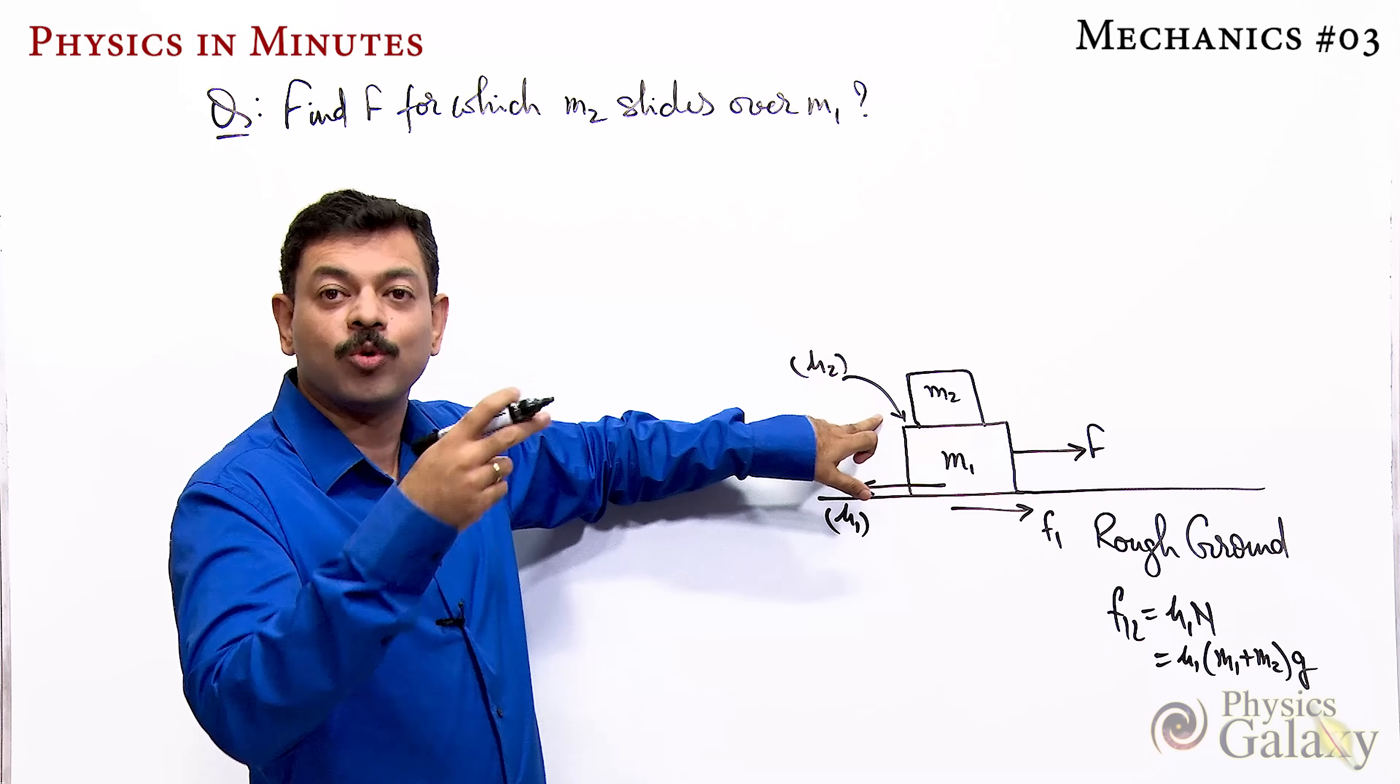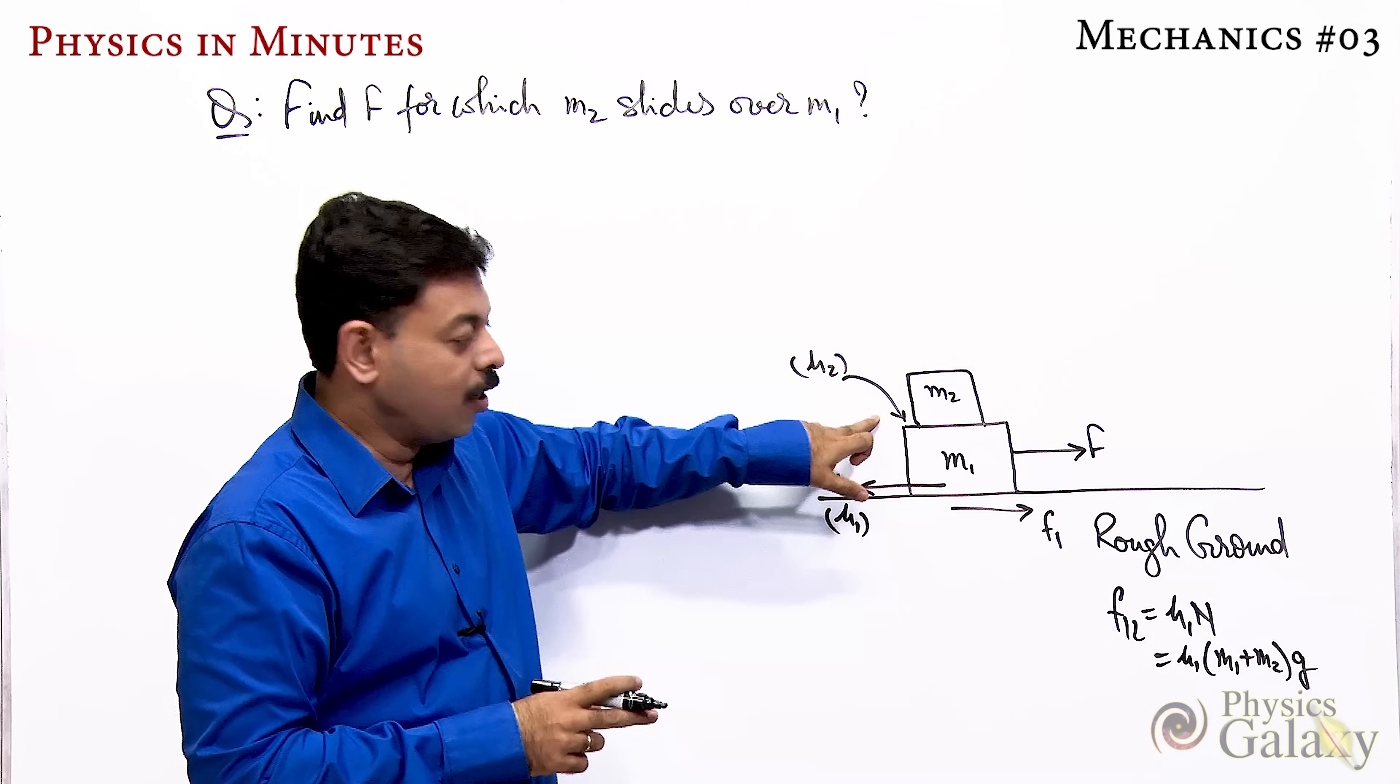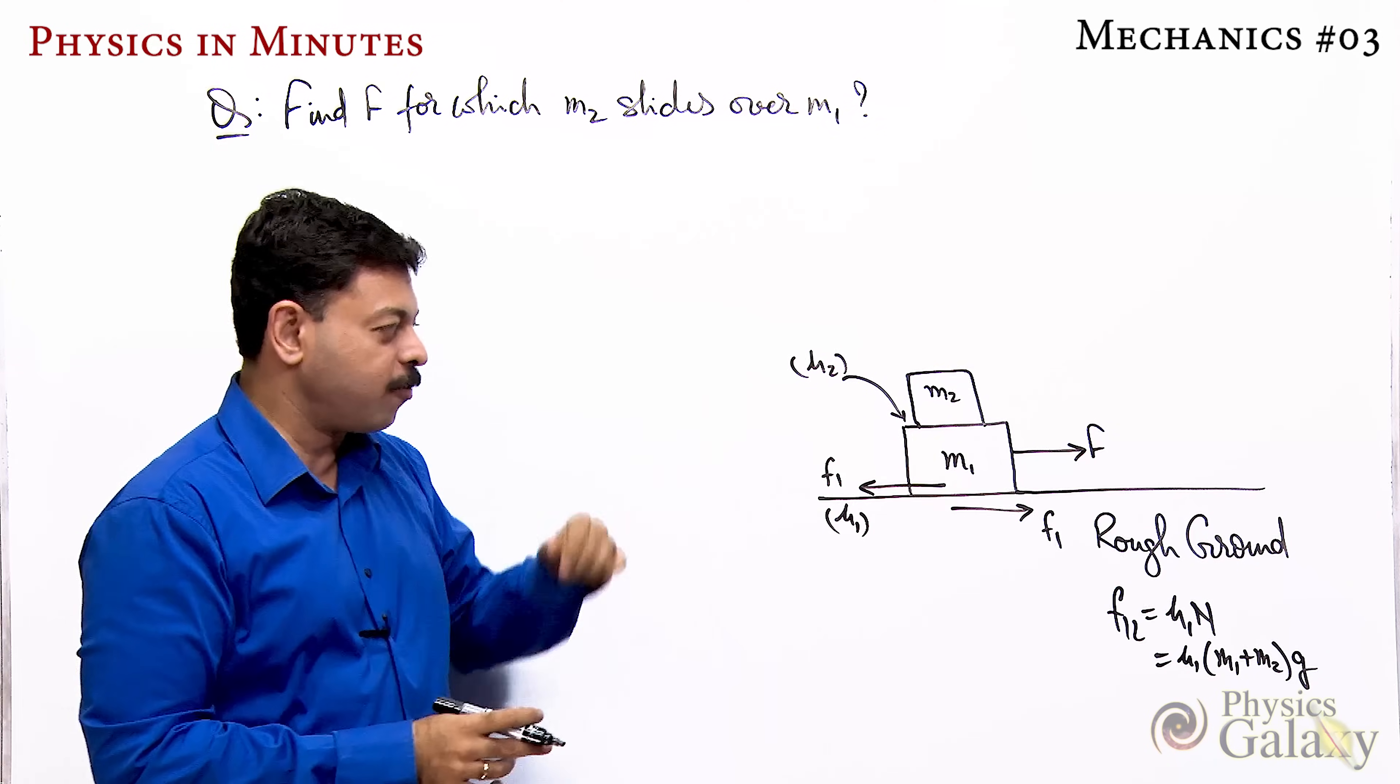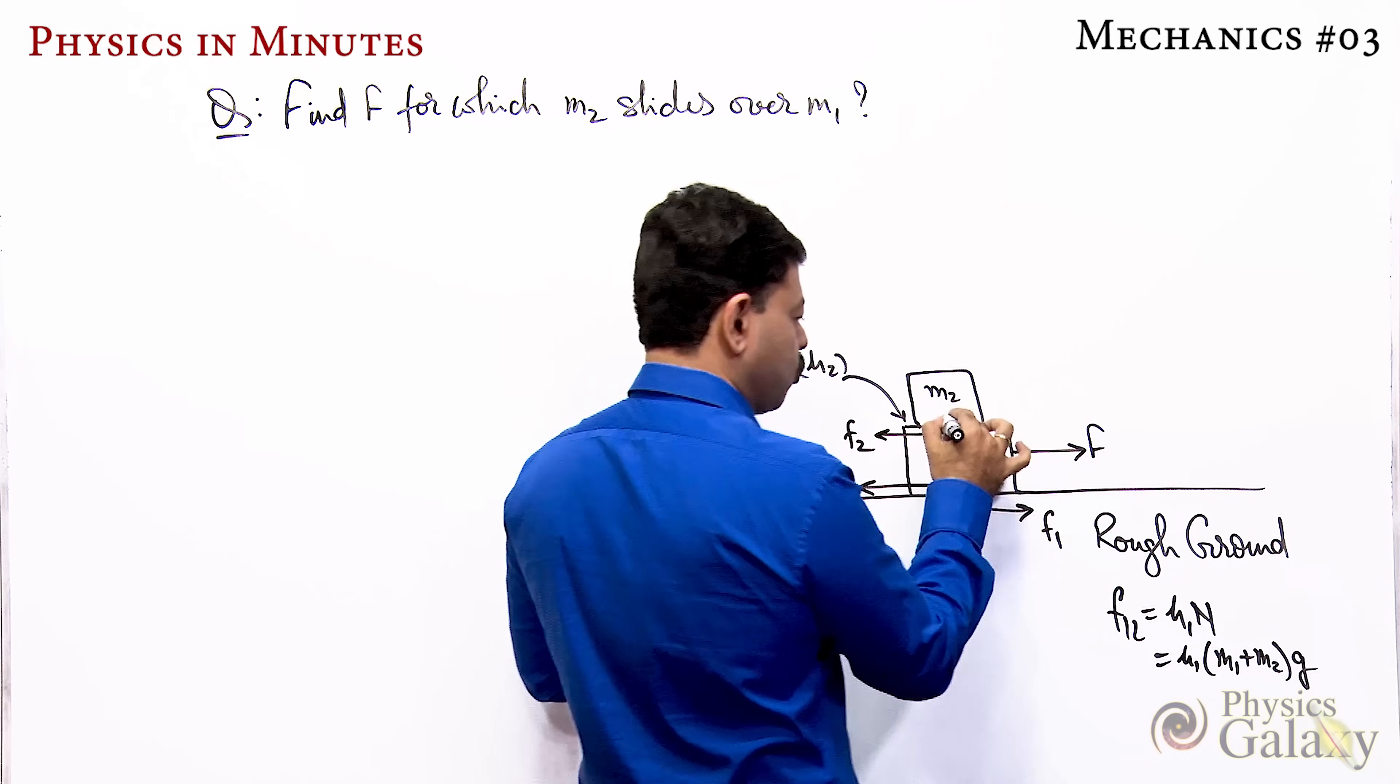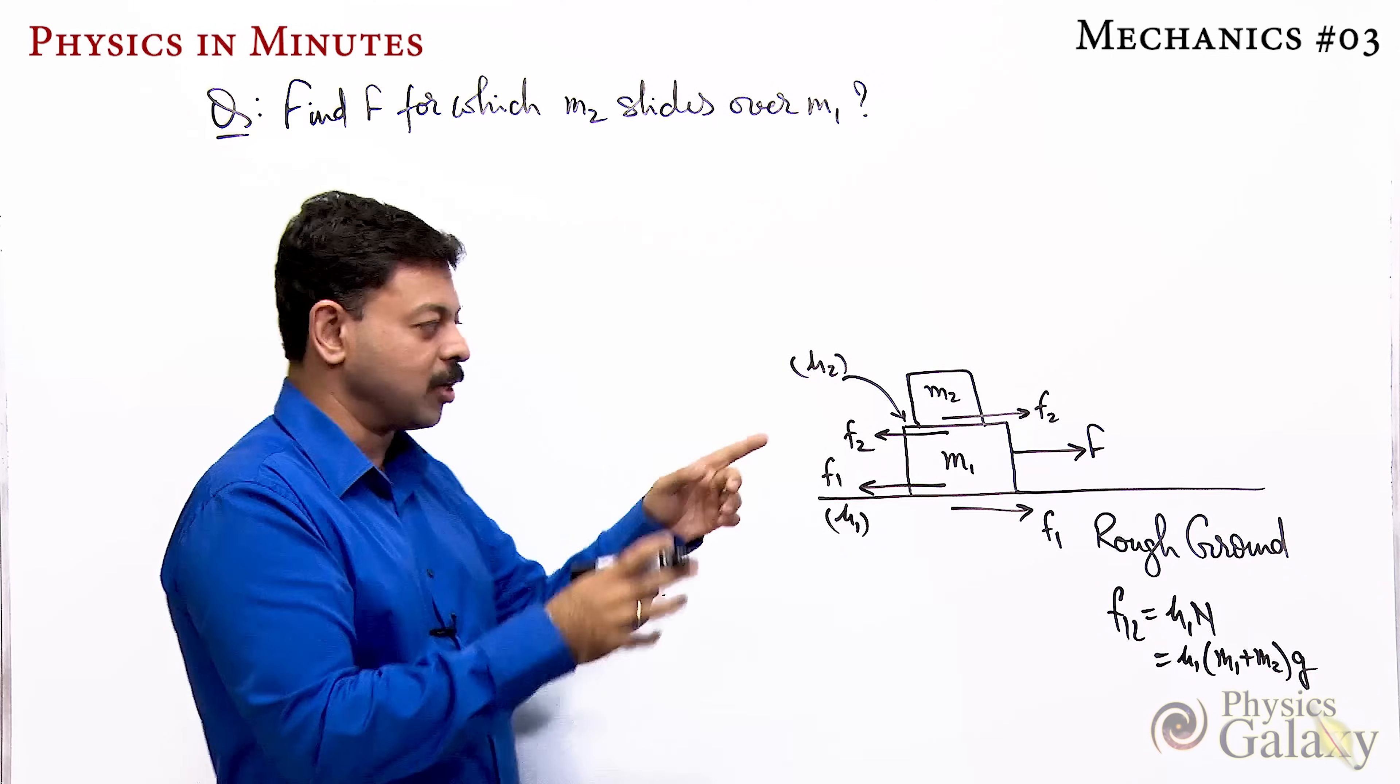If this surface was smooth, note this point as it's very important, if this surface was smooth then m2 due to inertia would want to stay here, m1 would come out and m2 would fall down. But now it's rough, so m2 due to inertia wants to stay, so it will oppose m1's motion. Friction f2 will act backward on m2 and forward on m1, and this f2 will take m2 along with it.